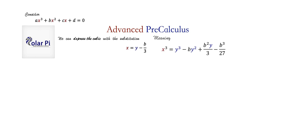With the substitution x = y - b/3, x³ becomes this expression — that's just cubing the right-hand side, doing (y - b/3)³, and you get all this. Similarly, squaring x gives us this. We want expressions for x³ and x² based on this substitution because we're going to substitute into the standard cubic.